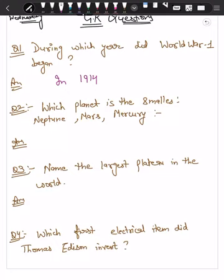Second question is: Which planet is the smallest? To get consa planet jo hai in tino mission Neptune, Mars, or Mercury? In tino miss a hamara sabse chota jo hai planet konsa hai? That is Mercury.